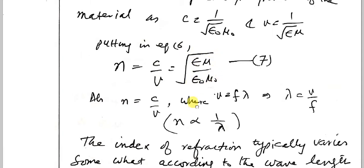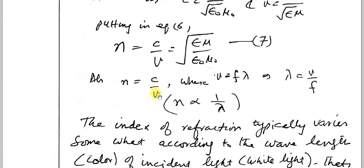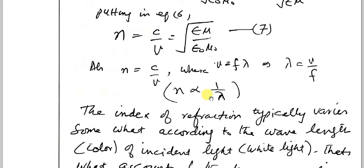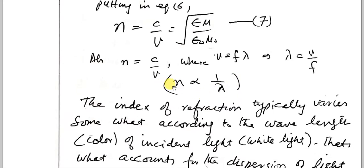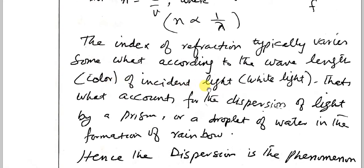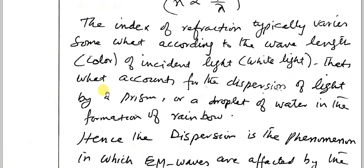Since n equals C by V and V equals frequency times wavelength, we can put that in this term. So we find that n is inversely proportional to one over lambda. Now, the indices of refraction typically varies somewhat according to the wavelength, that is the color of the incident light. That is what accounts for the dispersion of light by a prism or a droplet of water in the formation of rainbow.